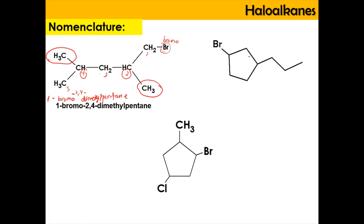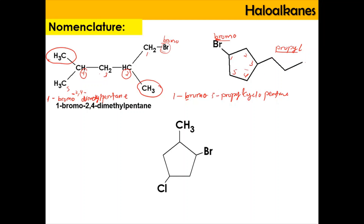For the cyclic compound, the ring has five carbons making it cyclopentane. There is a bromine substituent and a propyl group. Following alphabetical order, bromo takes carbon number 1 and propyl takes carbon number 3. The full IUPAC name is 1-bromo-3-propylcyclopentane.